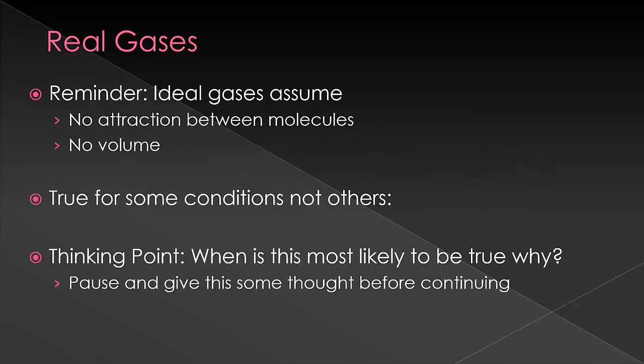First, let's remember what we're talking about when we say ideal gases so we know when those assumptions aren't true. Ideal gases assume that we have no attraction between molecules. So the molecules are not interacting at all. They also assume that they have no volume. So we call this a point mass. It has mass, but no volume. This is true for some conditions, but not for other conditions.